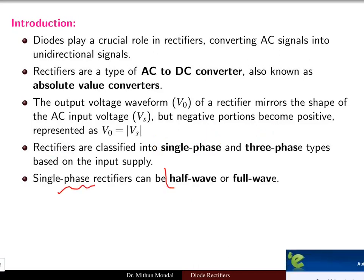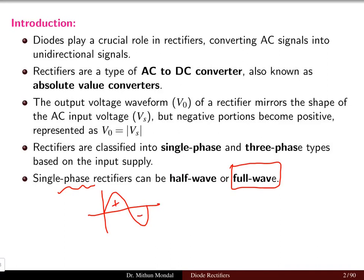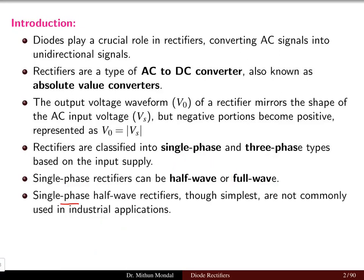Single phase rectifiers can again be classified as half wave and full wave. When we have the input signal with both a positive and a negative half, if only one half is rectified then it is a half wave rectifier. If both halves are rectified then it is a full wave rectifier. Single phase half wave rectifiers, though the simplest, are not commonly used in industrial applications.